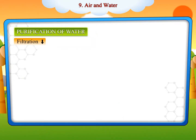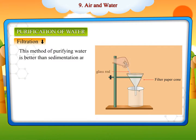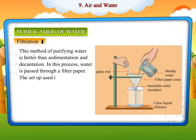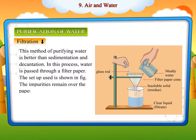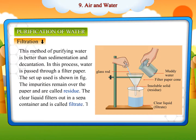Filtration. This method of purifying water is better than sedimentation and decantation. In this process, water is passed through a filter paper, as shown in the figure. The impurities remain on the filter paper and are called residue. The clear liquid that filters out into a separate container is called filtrate. This process is called filtration.